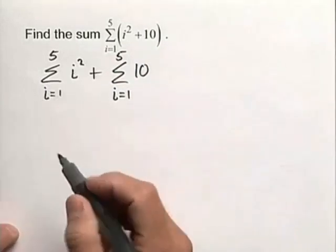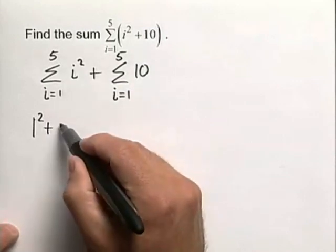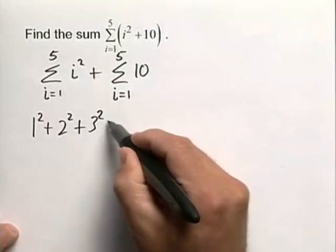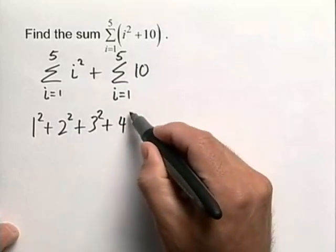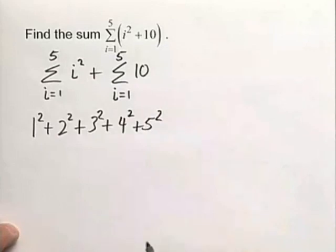We're going to start with 1, and the way summation notation is represented is 1 squared plus, we're going to go to the next term, which is 2 squared plus 3 squared plus 4 squared plus 5 squared. Once we've reached this 5, we go ahead and stop.